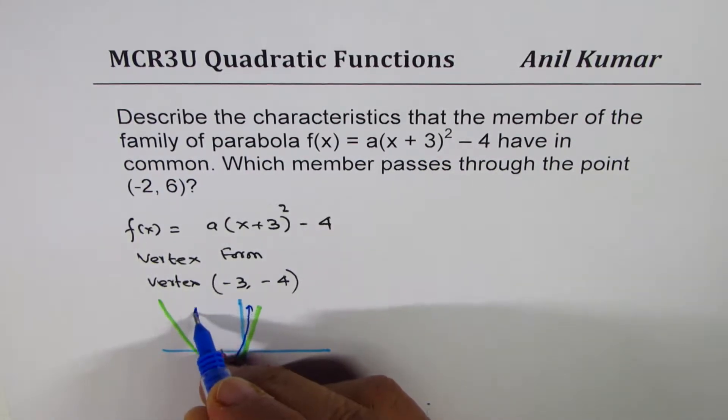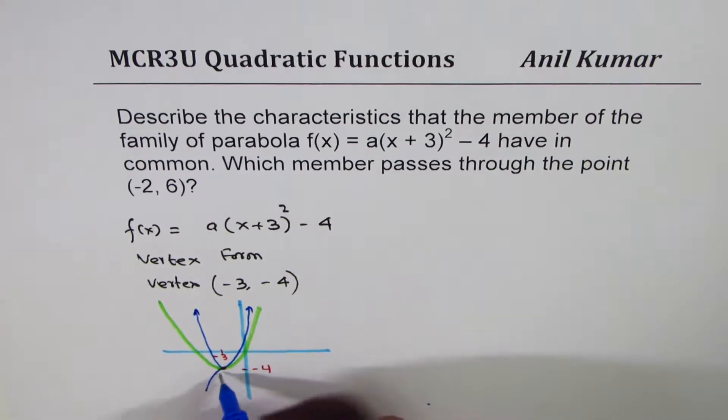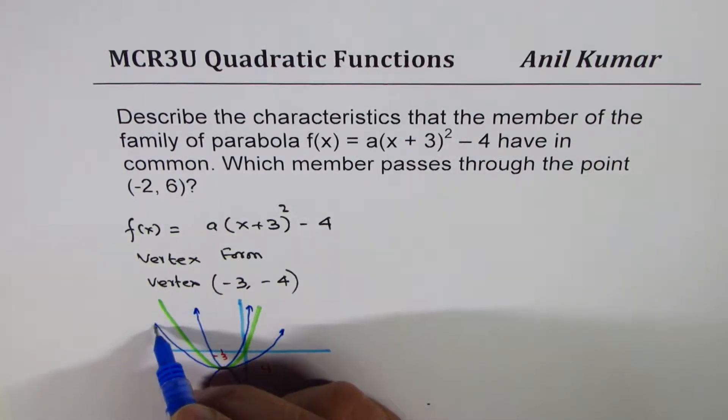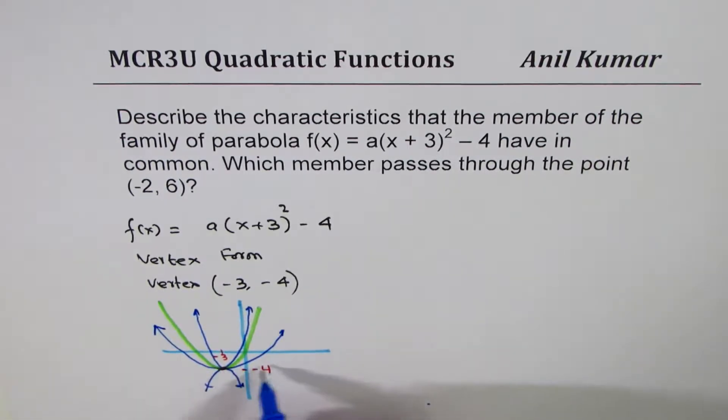So we could have a parabola kind of like this. We could have a parabola even like this. Or like this. As far as the vertex is same, it belongs to the same family.